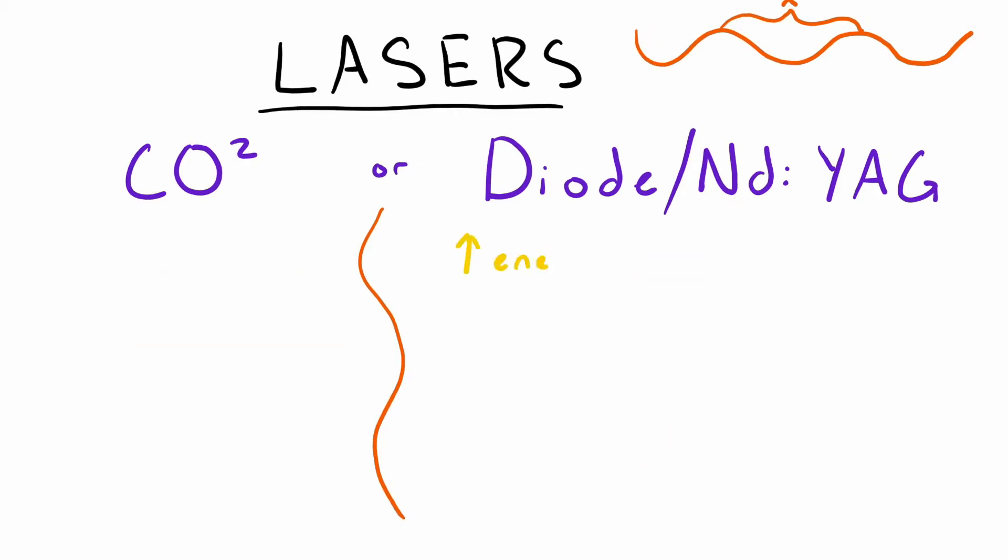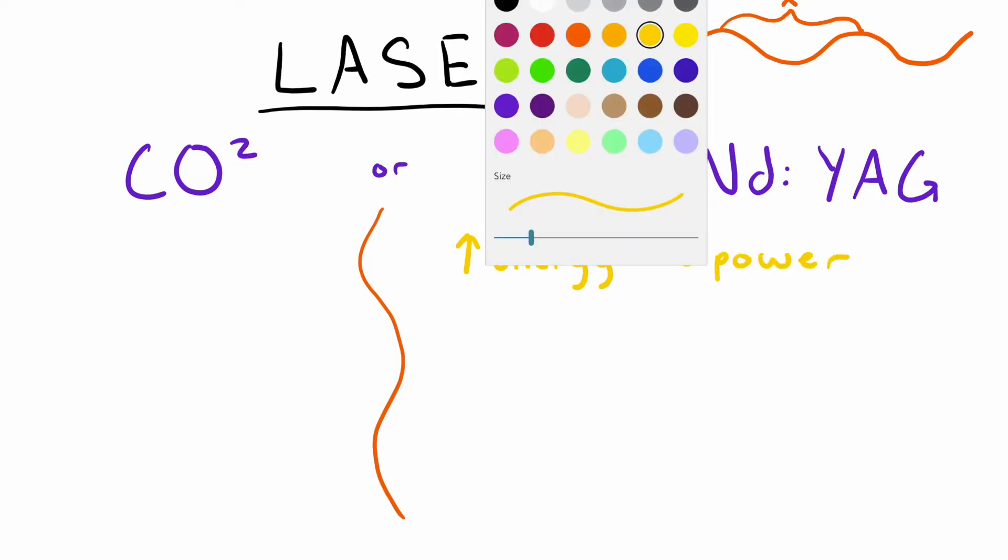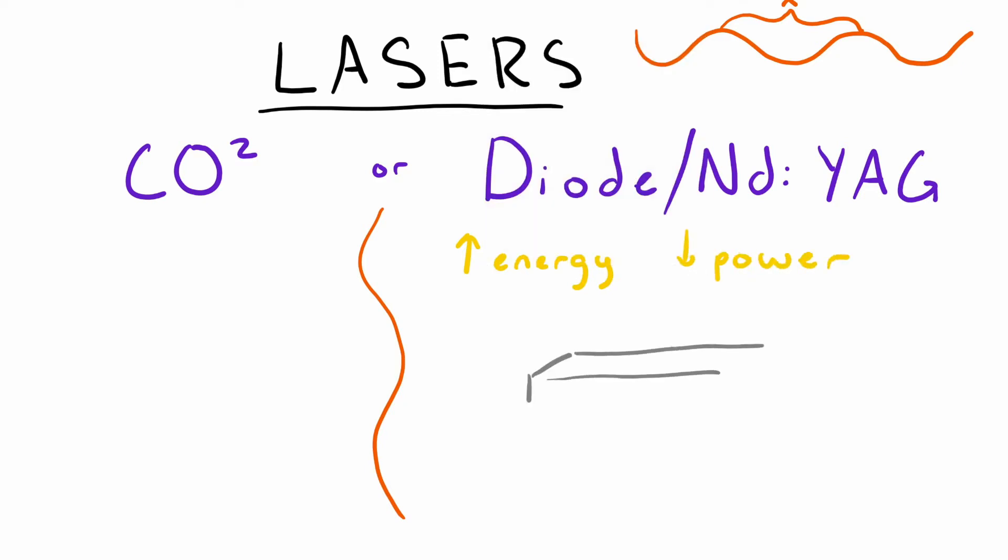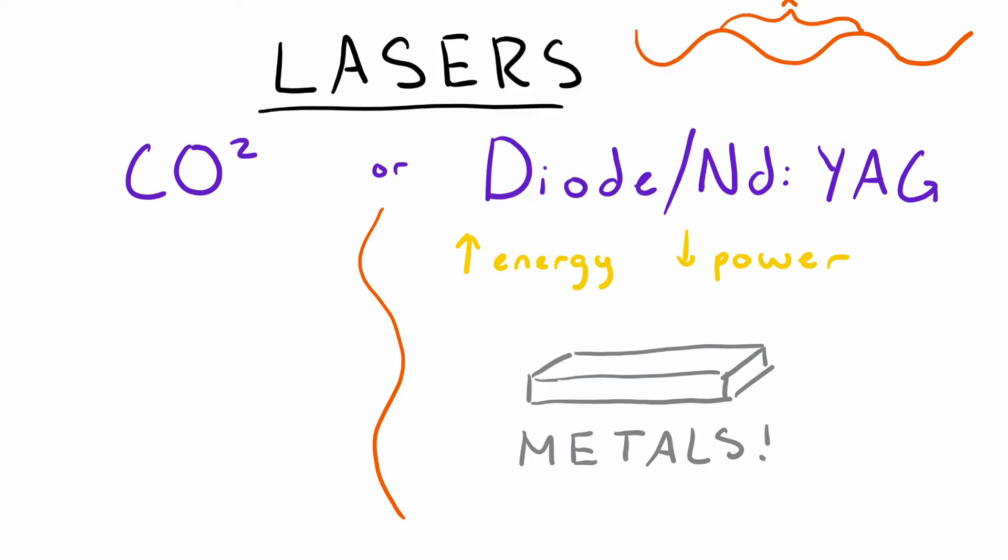From this we can tell that diode lasers contain more energy, which is why their main purpose is for cutting through metal. But they're usually run at a continuously lower power than CO2 lasers. The reason they're able to cut through metal at such a low power is because different materials absorb different wavelengths of light.